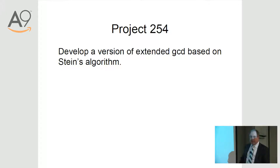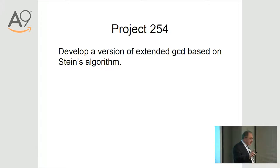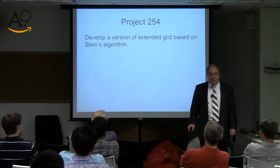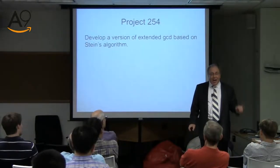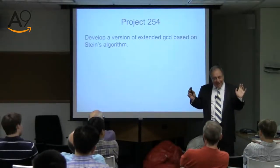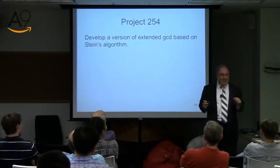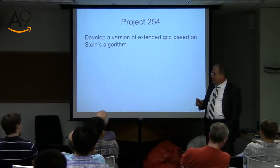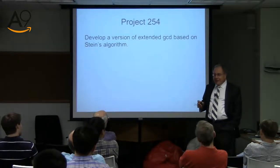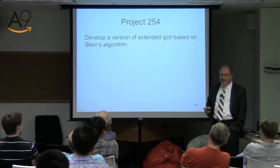This is a project for people who think they're clever. Remember the Stein algorithm? Try to figure out if you could do the extended Euclidean — extended GCD — based on Stein. The answer is you can. But I'm not going to tell you how. It's a very nice project. The first person who figured that out, as far as I know, is Knuth. So if you want to show yourself you're as clever as Knuth, do the project. It's hard but not very hard.